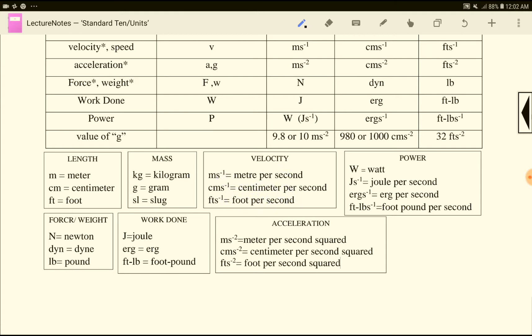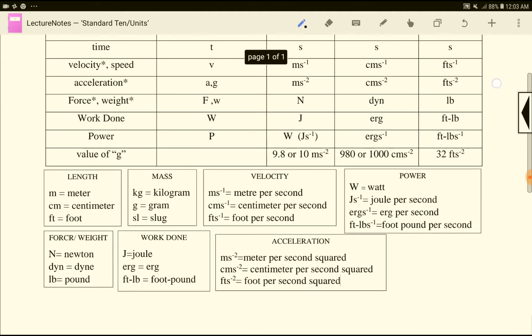Velocity: meter per second, centimeter per second, foot per second. Power units: Watt per second, erg per second, foot-pound per second. Force unit is Newton and dyne. Work done unit is Newton. Acceleration unit is meter per second squared. Force unit - we need to change the unit correctly.